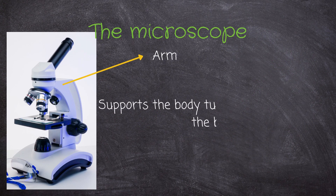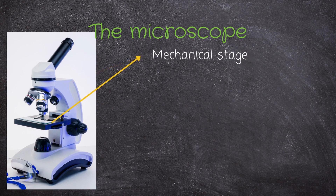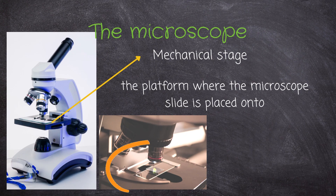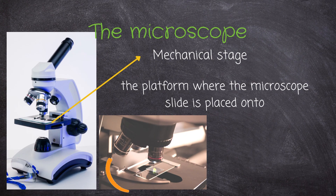Moving on to the arm, which supports the body tube and connects it to the base. It basically supports the whole microscope. Then we have the mechanical stage, which is the platform where the microscope slide is placed.